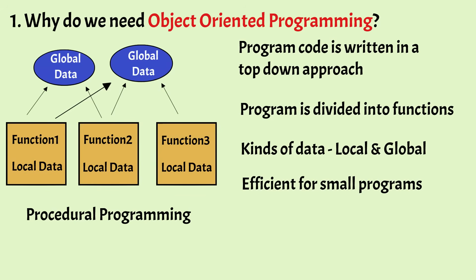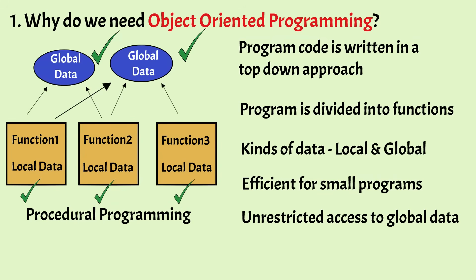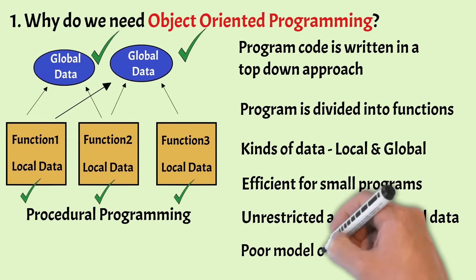However, there are two major limitations with procedural languages. First is Unrestricted Access. As a program grows larger, there are many functions and global data items which leads to a larger number of connections between them, which is not a good practice in programming. For example, it could make a program difficult to modify. Suppose when a global data item's type is changed from integer to float, all the functions that access that particular global data item must be modified to work with a float data item, and that is not an easy job when there are many functions in the program. Second, procedural programming provides a poor model of the real world.